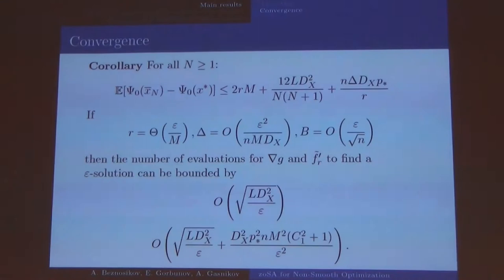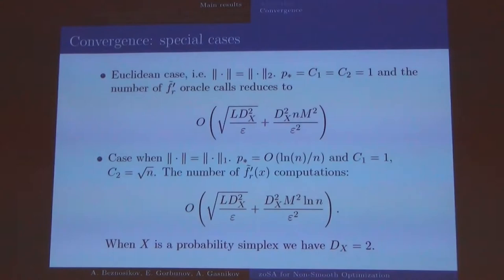Let's talk about some special cases. For example if we have Euclidean norms constant P is one, constant C is one and we have oracle calls for gradient stochastic gradient of F something like this. It's very similar with Lan's result, one change is constant N in this. And if we have the first norm constant P is something like this and we have this oracle hardness for our problem. And if X is probability simplex, D of X is equal to 2 and hardness changes without the T of DX.